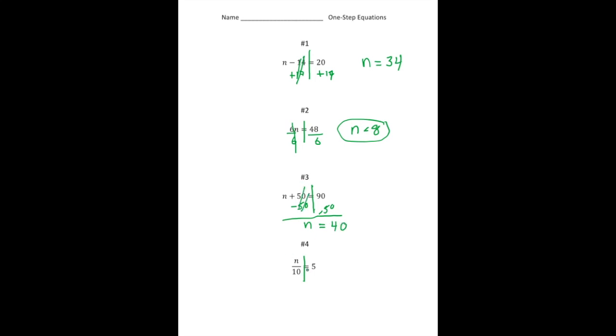And number 4. n divided by 10 equals 5. The opposite of dividing by 10 is multiplying by 10. And what we do to one side, we do to the other side of the equal sign. So these cancel out. And n is going to equal 5 times 10 is 50. And again, let's take that answer, plug it in. 50 divided by 10 is 5.